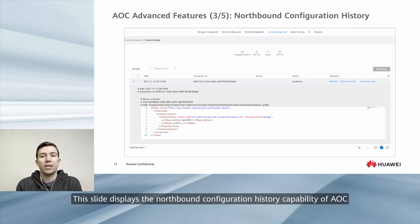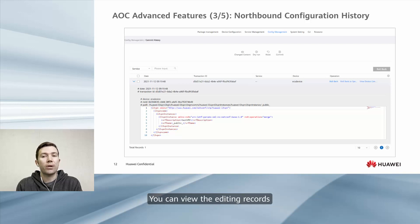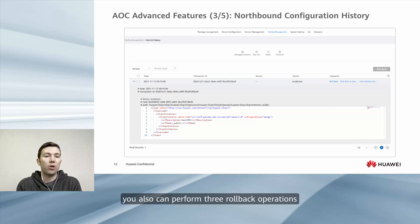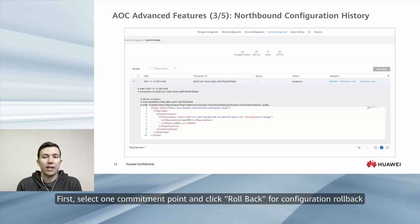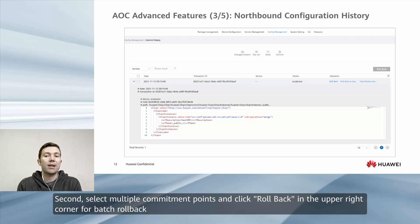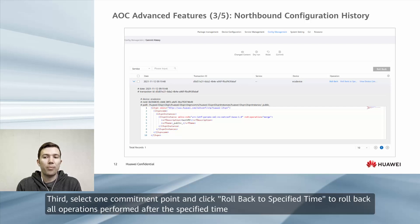This slide displays the northbound configuration history capability of AOC. You can view the editing records. Based on the configuration history, you can also perform three rollback operations: first, select one commitment point and click rollback for configuration rollback; second, select multiple commitment points and click rollback in the upper right corner for batch rollback; third, select one commitment point and click rollback to specified time to roll back all operations performed after the specified time.